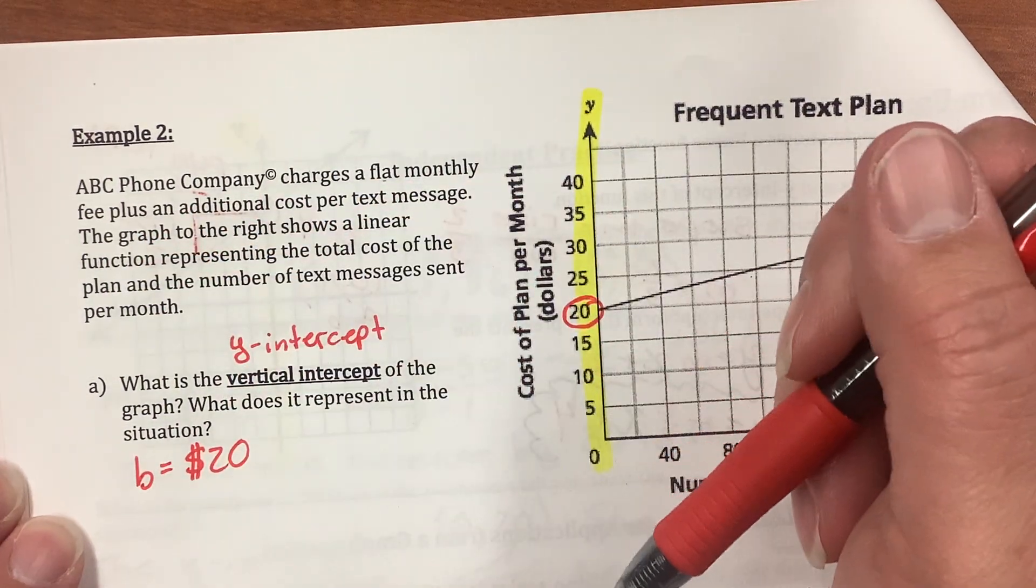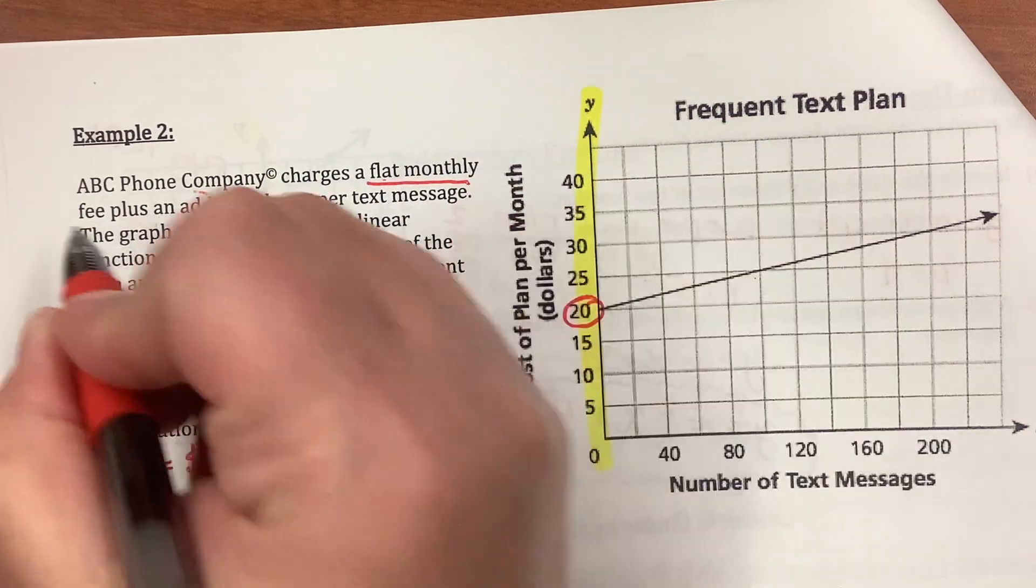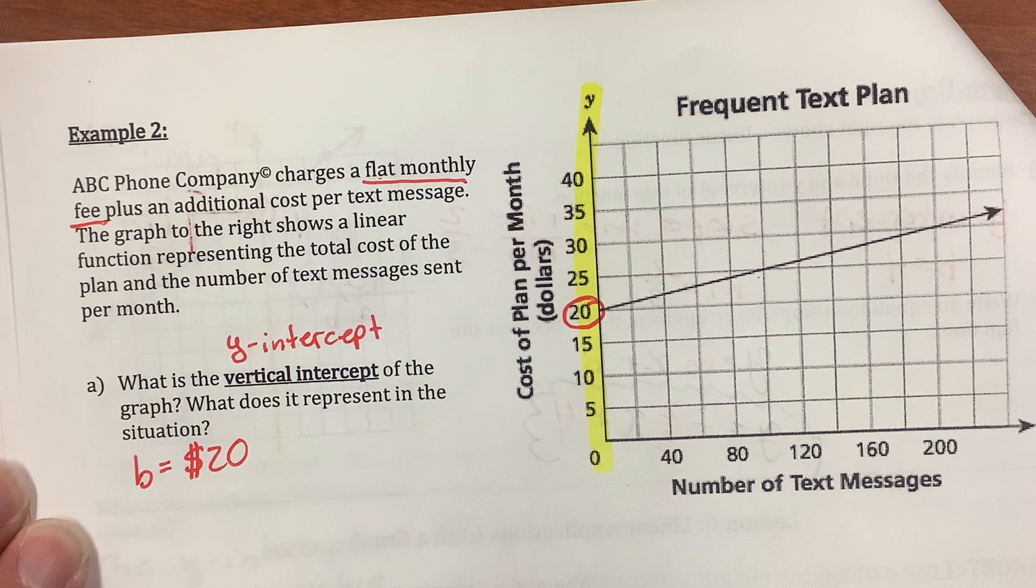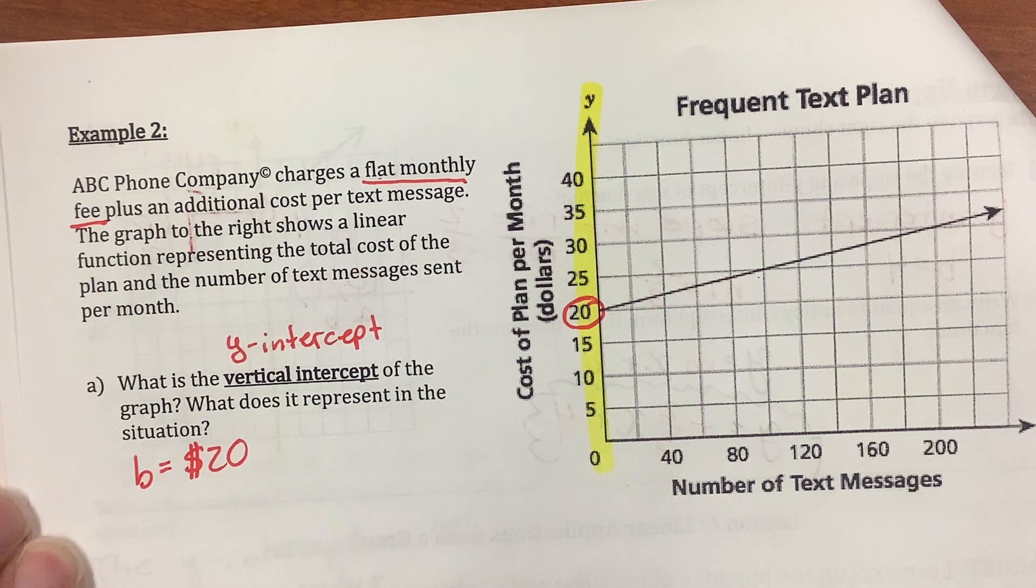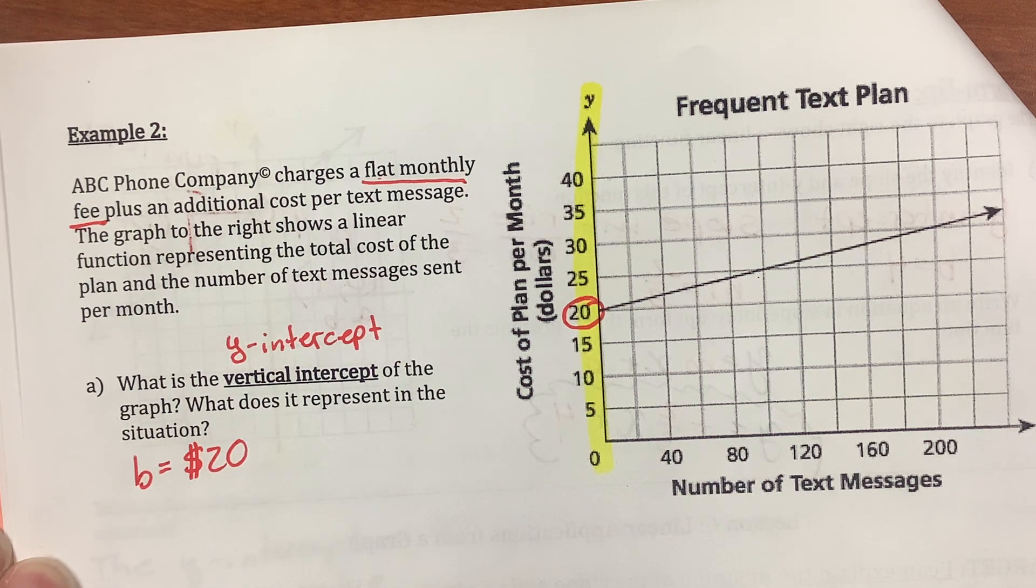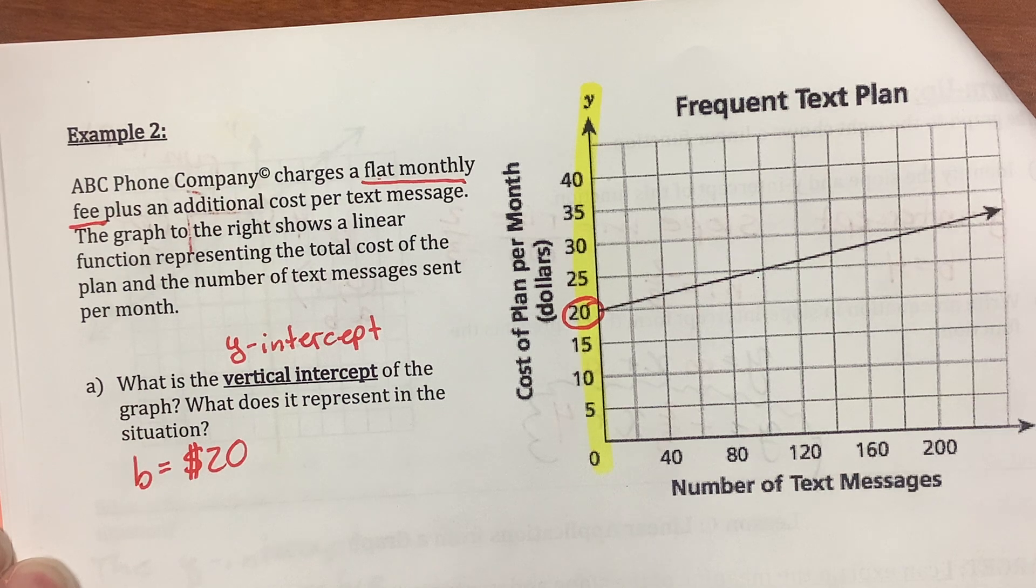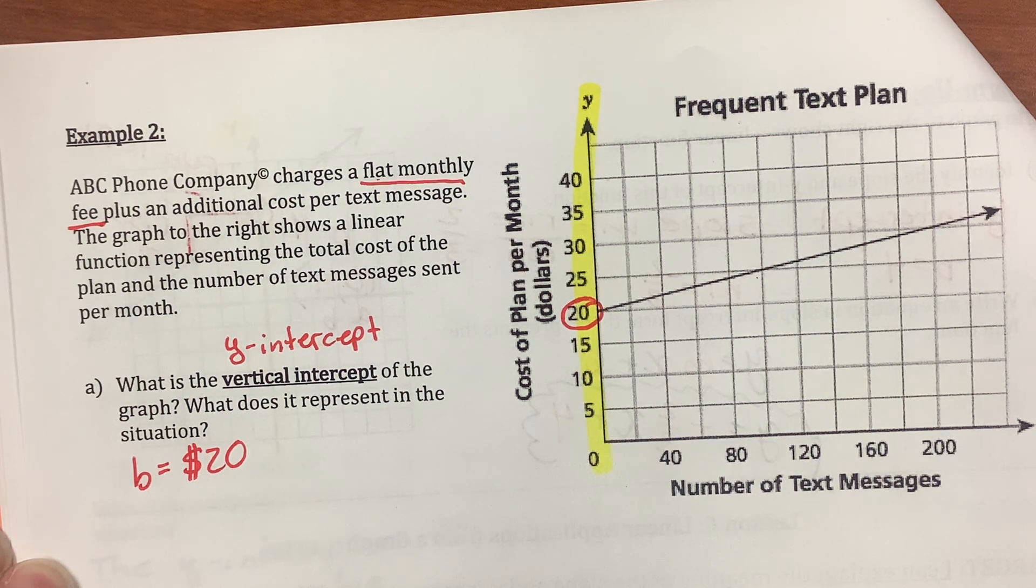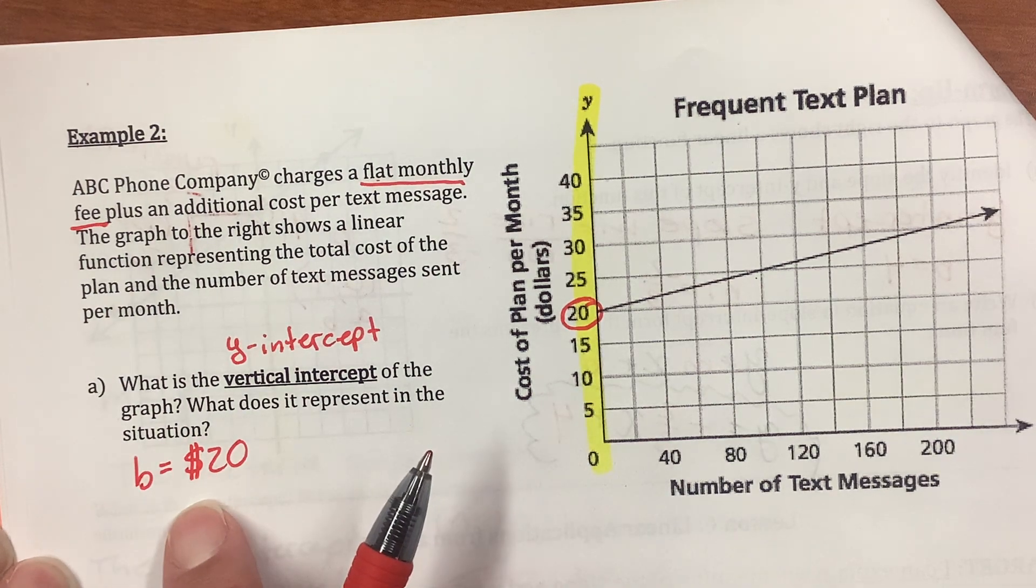Here's the y and I'm going to highlight that. And it intersects right here at 20. 20 what? $20. So, what does that mean? b equals $20. And let's go back and read it. Flat monthly fee. That's what you pay whether or not you use the service. A lot of things have a flat monthly fee.